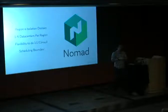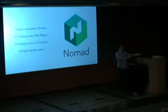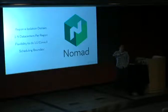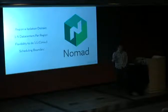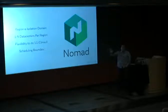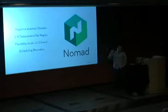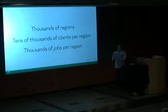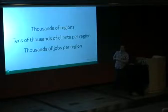The region is the isolation domain — if a region goes down, those jobs go down. We won't automatically migrate jobs to another region unless the job is defined to run in both regions. Within each region you can have one to N data centers — what we call data centers, AWS calls availability zones. This is very similar to how AWS works: if us-east goes down, you're in trouble.